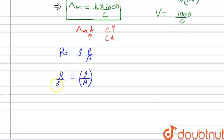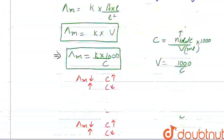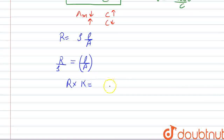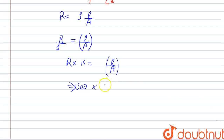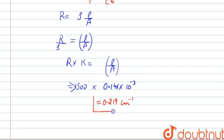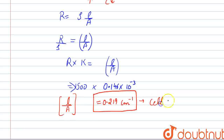Writing 1/resistivity as conductivity K, we get: cell constant L/A = R × K. Resistance is 1500 ohms and conductivity is 0.146 × 10⁻³ S/cm. Multiplying these, we get the cell constant as 0.219 cm⁻¹. So this is the value of the cell constant — the ratio of length to area.